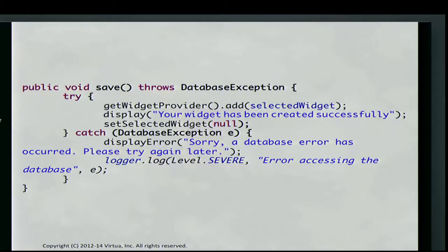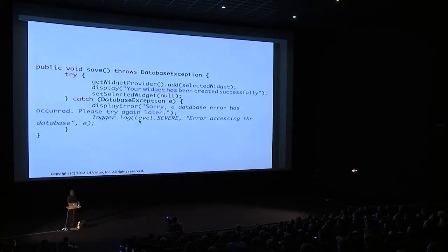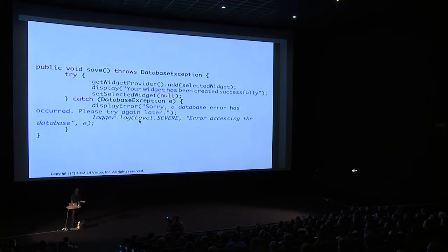Here's an example of recovering somewhat gracefully: we call the method, and if there's an exception we display an error back saying 'hey, there's a database error.' This presumably gets displayed by the UI and the user receives a message, then we log it saying we can't access the database. So now your application is actually handling the error — it's something you can recover from, you don't necessarily need to crash the UI completely, but you can tell the user something is wrong.